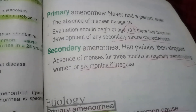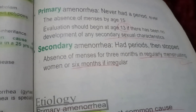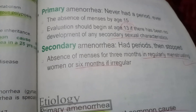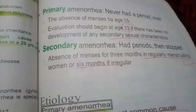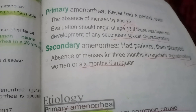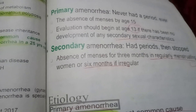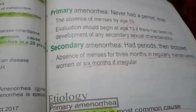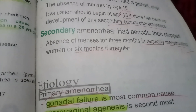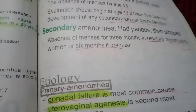Definitions of amenorrhea: primary amenorrhea is when a woman has never had a period — absence of menses by age 15, or evaluation should begin at age 13 if there has been no development of any secondary sexual characteristics. Secondary amenorrhea is when a woman has had periods and then stopped — absence of menses for three months in irregularly menstruating women, or six months if irregular.